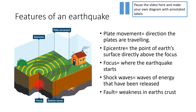When the plates that have been stuck eventually move, the built-up pressure is released along the faults or cracks, and that sends out huge pulses of energy known as shock waves. The shock waves travel out from the focus — the focus is where the earthquake starts, shown on the diagram as a red circle. The epicentre is the point on the Earth's surface directly above the focus. Pause your video here and see if you can draw your own diagram of the features of an earthquake, but rather than the four labels you can see on this one, try to add more detailed annotations.